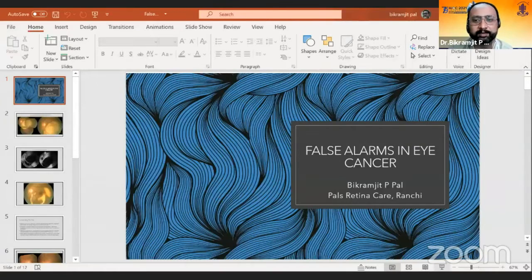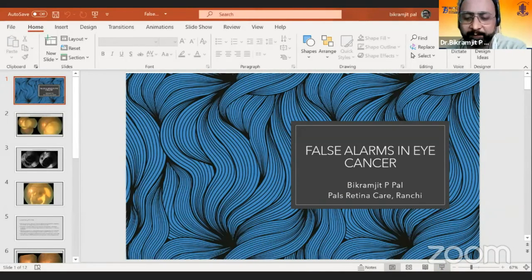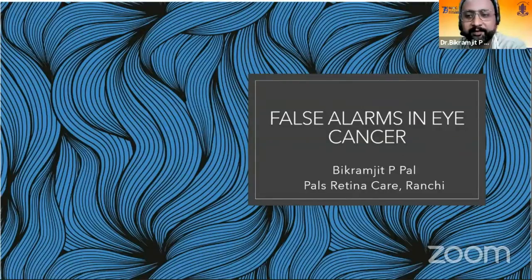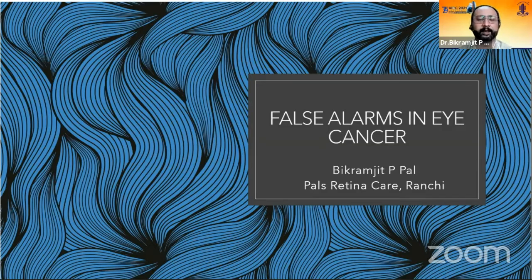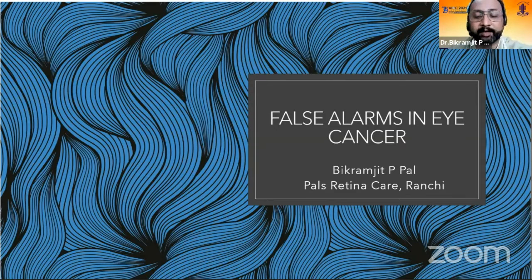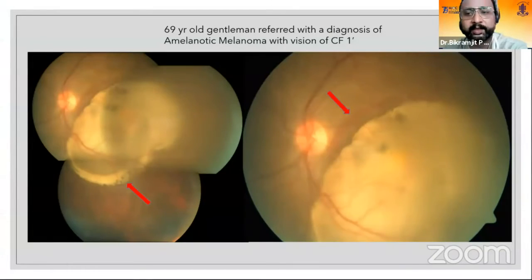I think I am the only odd man out amongst all the oculoplastic surgeons, so please bear with me. I'll share a few cases which were referred to me as intraocular mass lesions, but on clinical examination and various other investigations we saw that it is not an intraocular tumour — it was something else. This presentation is basically to see what we learn from each of those cases.